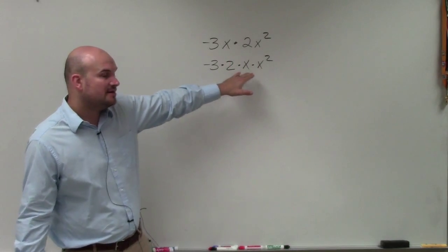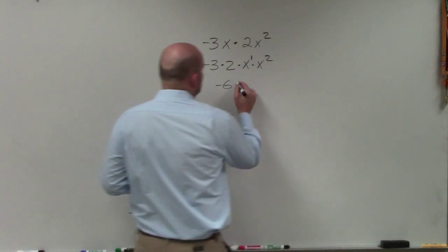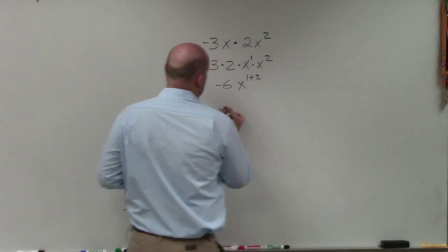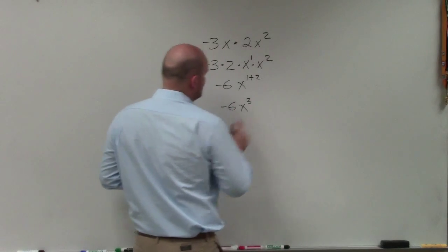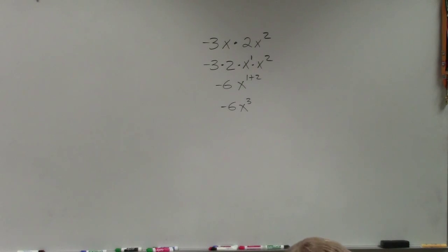When you're multiplying exponents, remember that a single x has an exponent of 1. Then all we do is x to 1 plus 2, which gives us negative 6x cubed. So remember, when you multiply exponents, you add the powers.